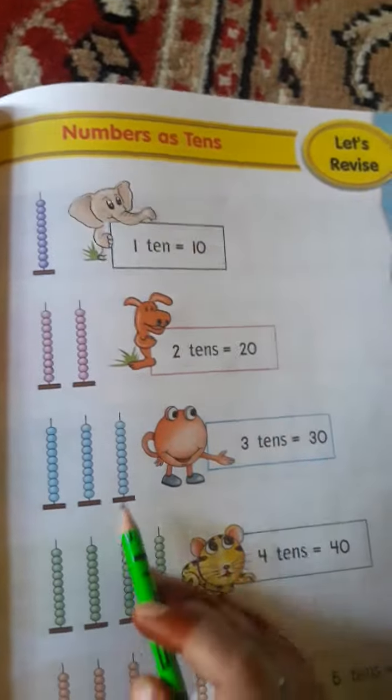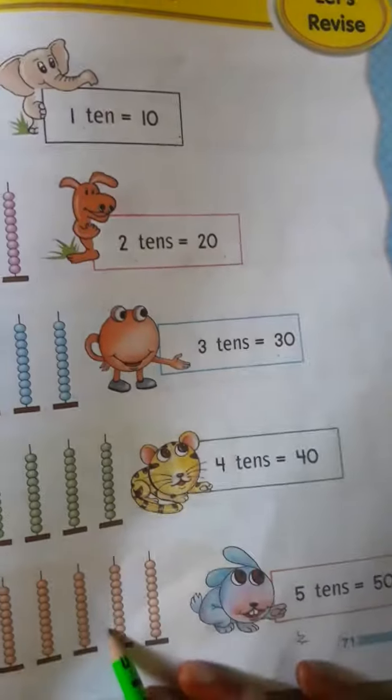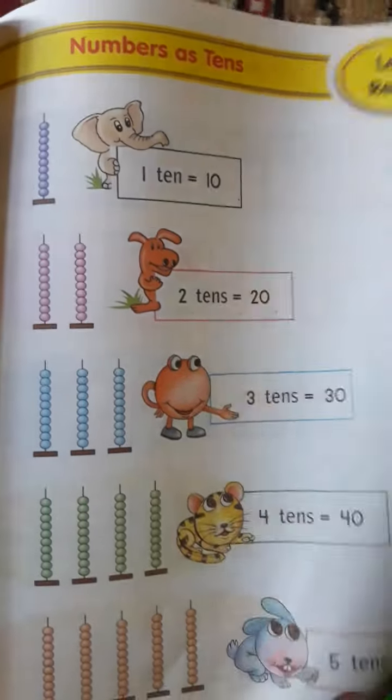3 tens means 30, 4 tens means 40, 5 tens means 50. You will turn to the second page in your book, page number 72.